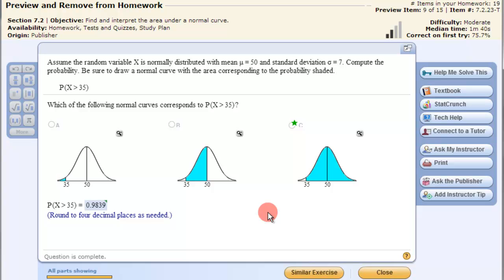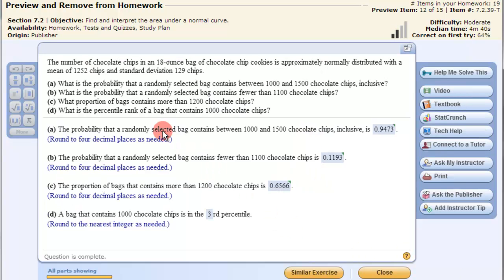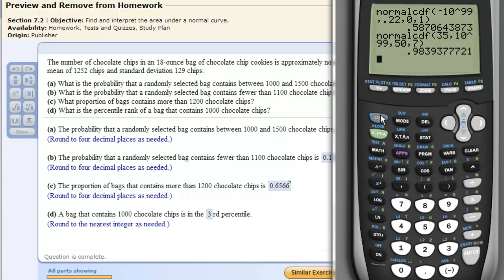Now let's look at an in-between. Here's a word problem that asks an in-between question. The number of chocolate chips is approximately normally distributed with a mean of 1252 and a standard deviation of 129. Find the probability that a randomly selected bag contains between 1000 and 1500 chocolate chips, inclusive.